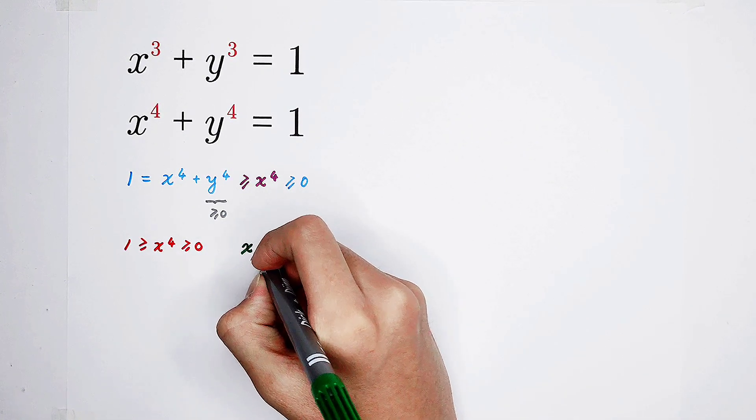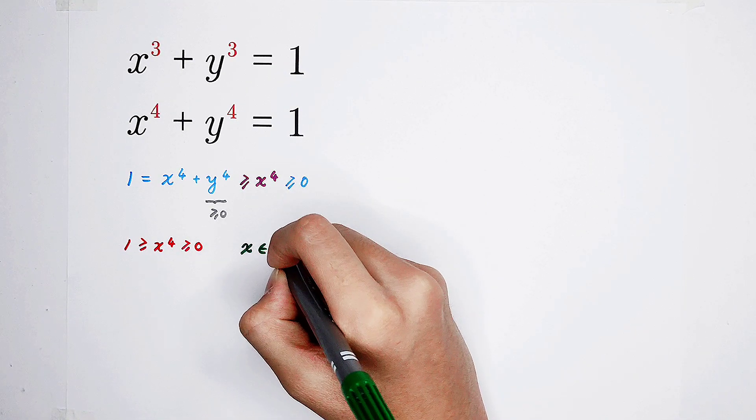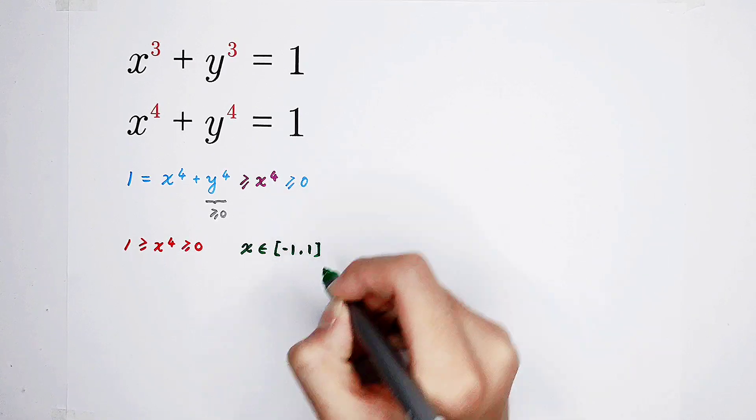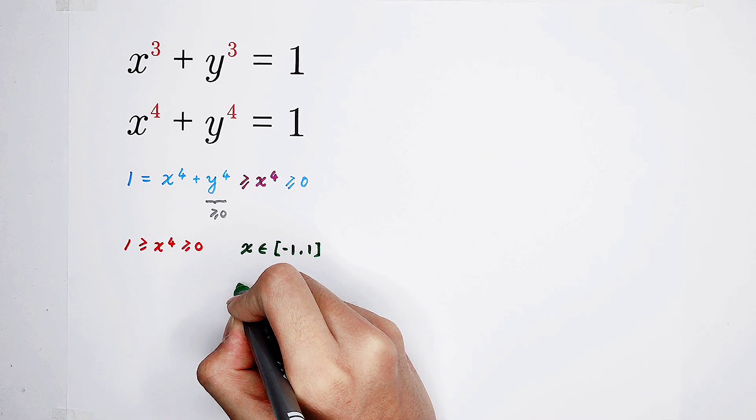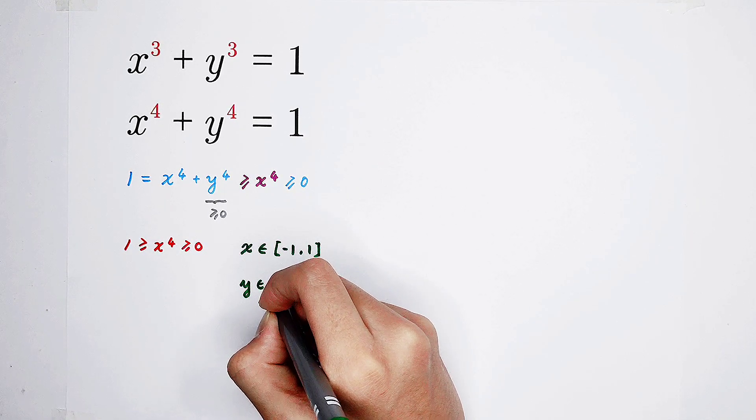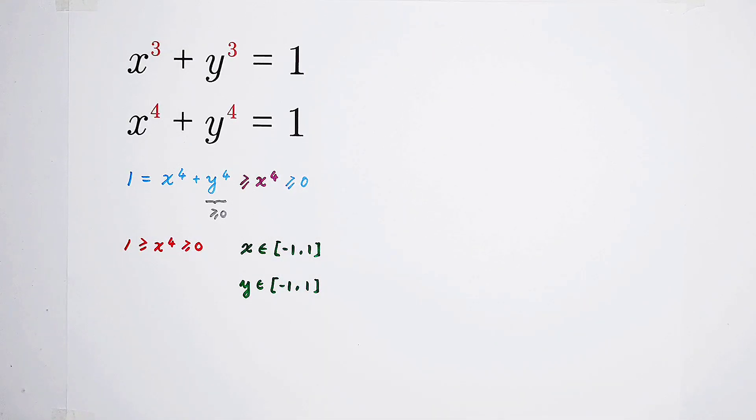x is in the closed interval from negative 1 to 1. Of course, by the same method, y as well. y is also in the closed interval from negative 1 to 1. We've all noticed closed intervals.